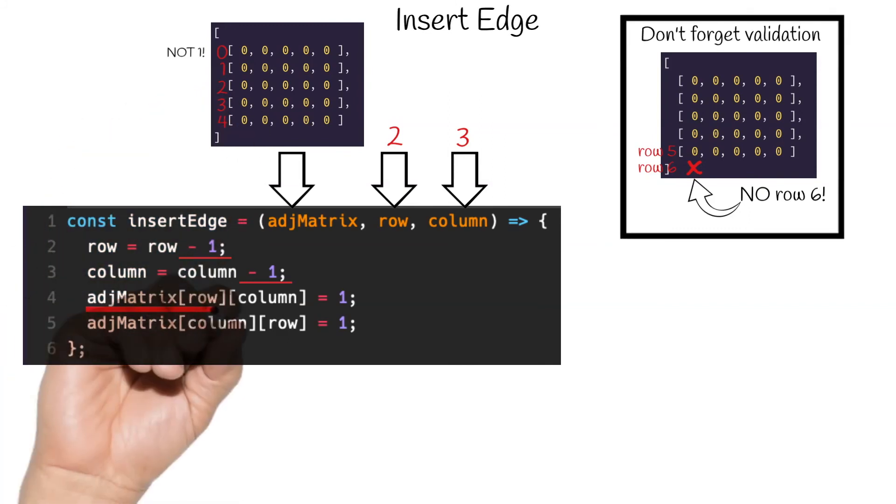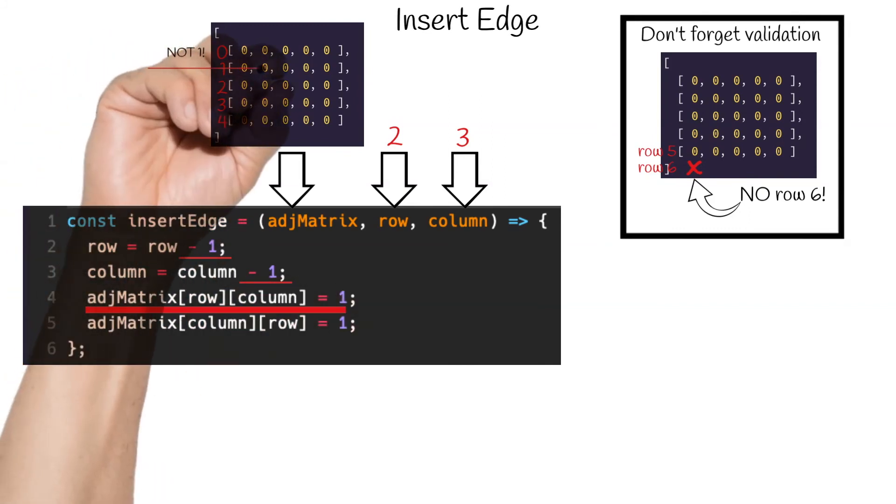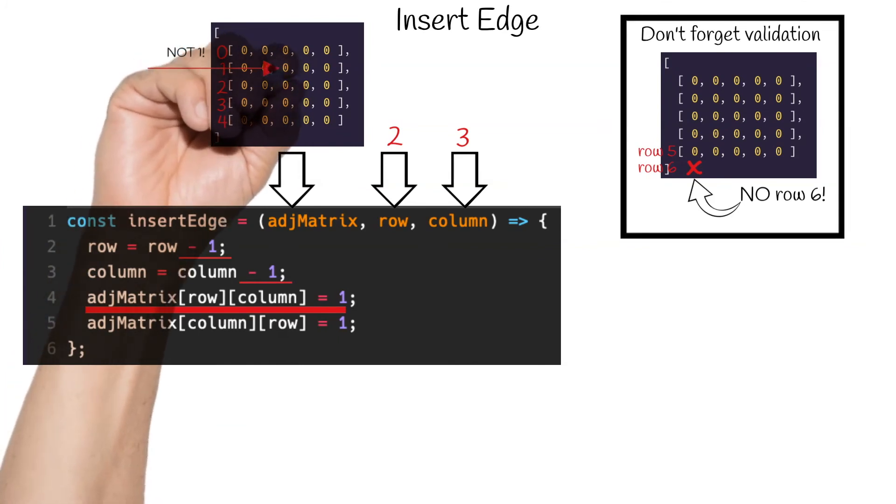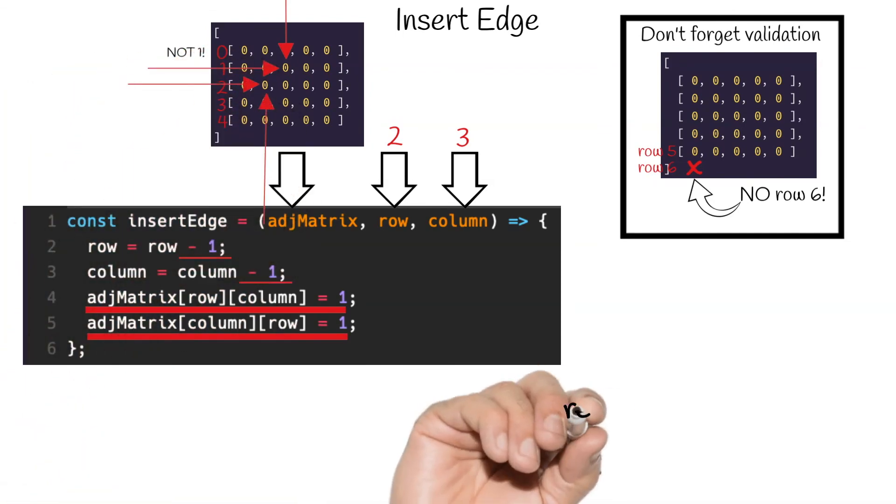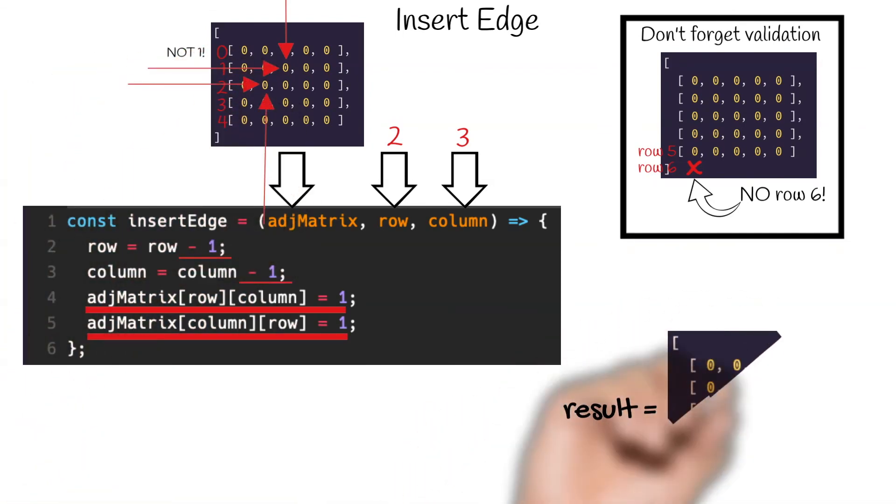Finally, we insert a 1 at the coordinates provided by the row and column. So if the row is 2 and the column is 3, a 1 will be inserted here. And let's not forget that for undirected edges, if there is an edge going from node 1 to node 2, there is also an edge going in the opposite direction from node 2 to node 1, which is represented in this next line. And finally, our resulting matrix will look like this.